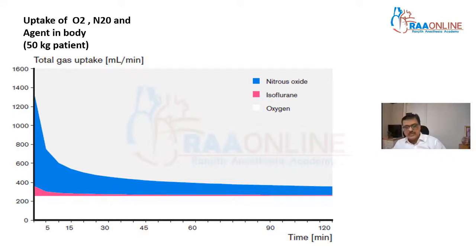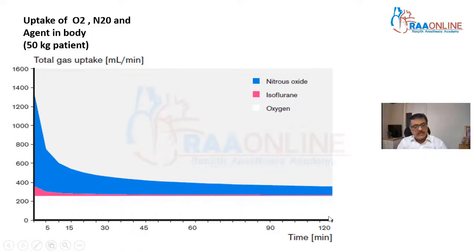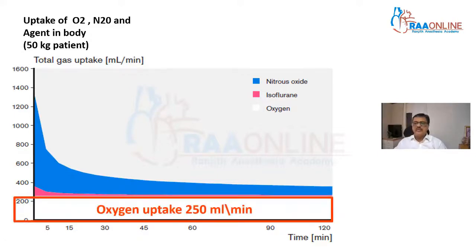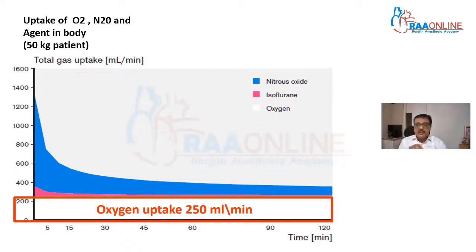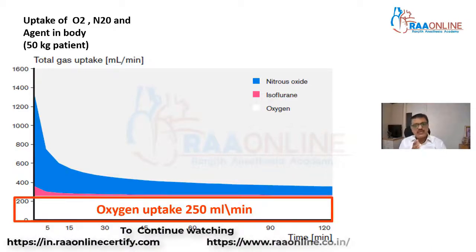After 15 minutes, nitrous uptake is almost nil — whatever nitrous is going into the patient is coming back the same into the circle. But oxygen uptake remains constant throughout at 250 ml per minute. Because nitrous uptake is higher in the first 10 to 15 minutes — up to 1,400 ml to 2 liters — that is the reason we need to keep the flow higher for the first 10 minutes before commencing low flow, because nitrous uptake is more.